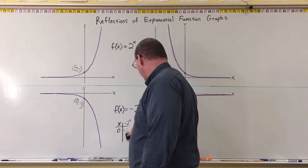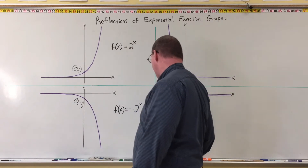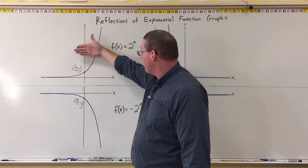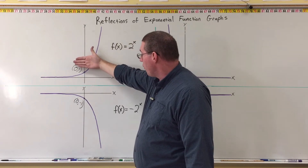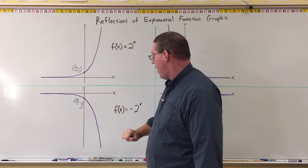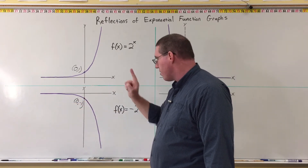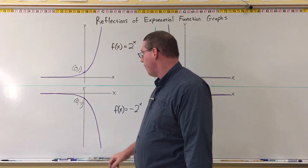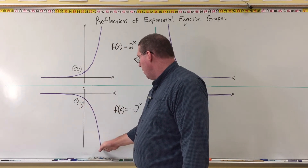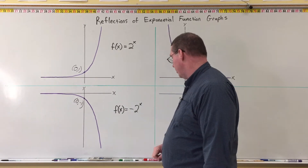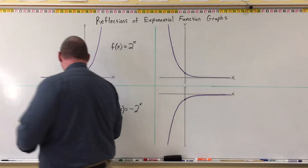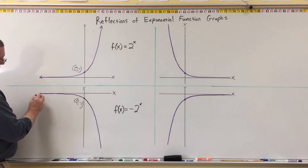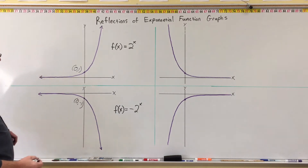When you put the negative on the front of the function, it reflects the graph of the exponential function vertically across the x-axis. The graph is now below the x-axis, passing through the point (0, -1). It's still flat to the left, still has a horizontal asymptote at 0, still goes steep to the right — but it goes steep in a negative direction instead of a positive direction.